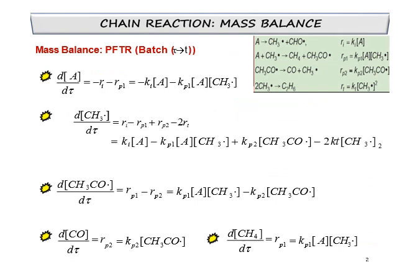Taking the example again of acetaldehyde producing methane and CHO. In the previous video, I already showed you the initiation step, propagation number one, propagation number two, and then the termination. We will perform mass balance for all four steps for all these species, assuming the reaction occurs in batch or PFTR.